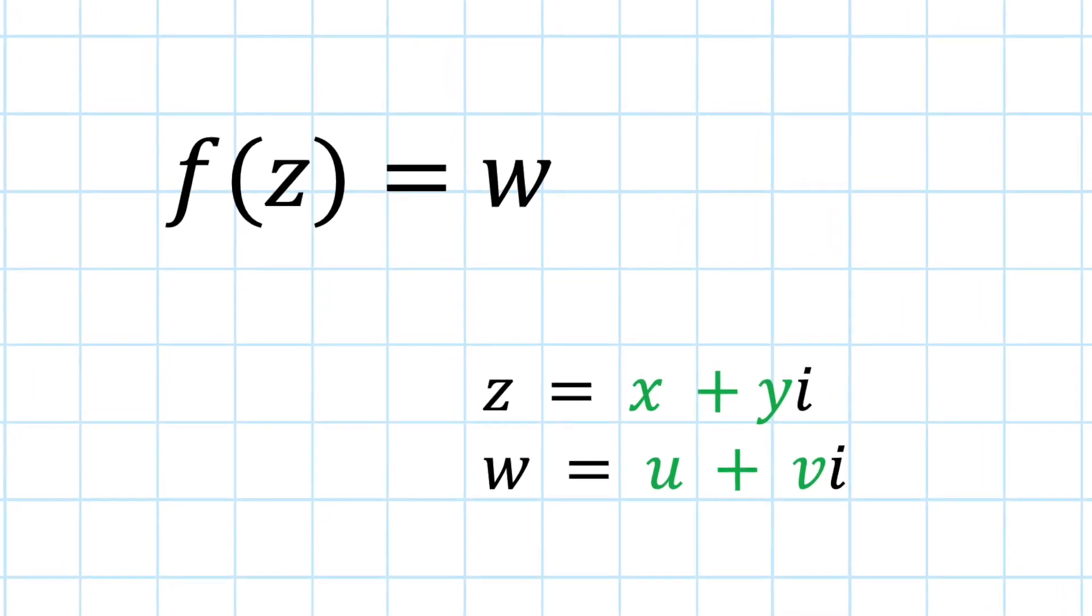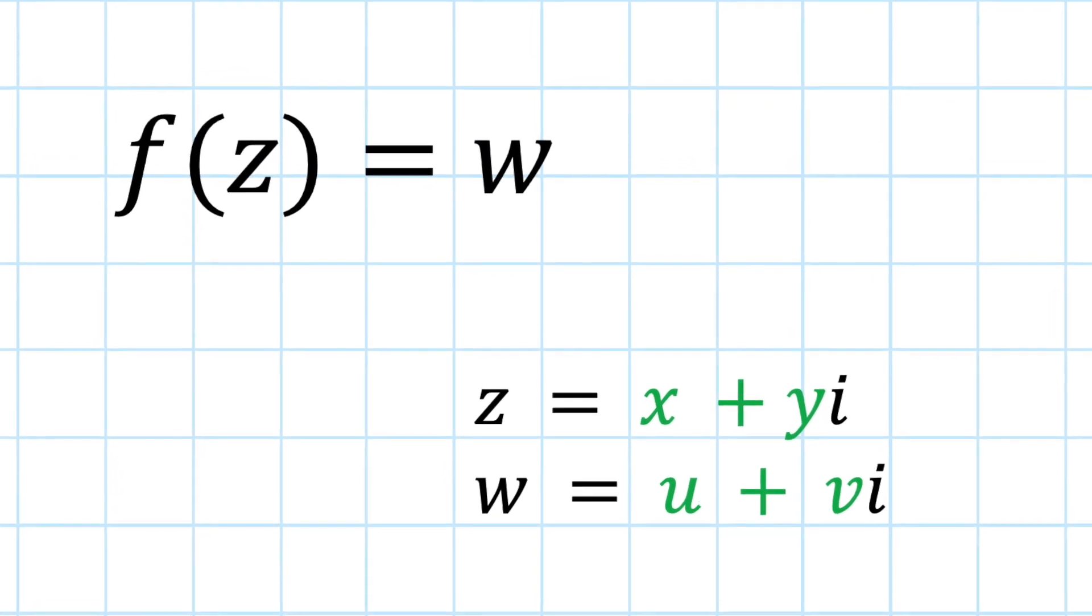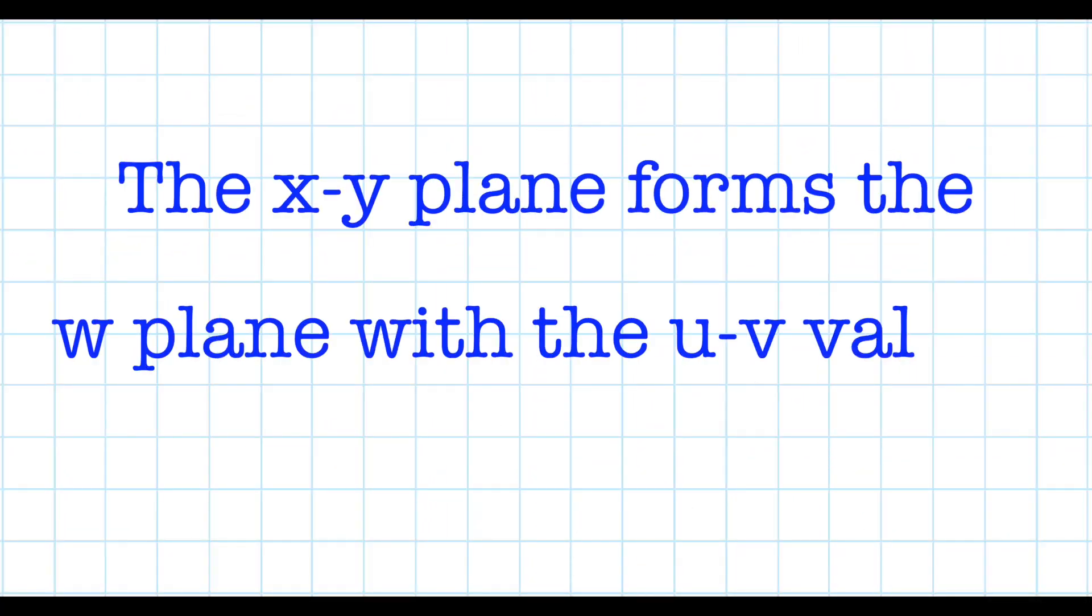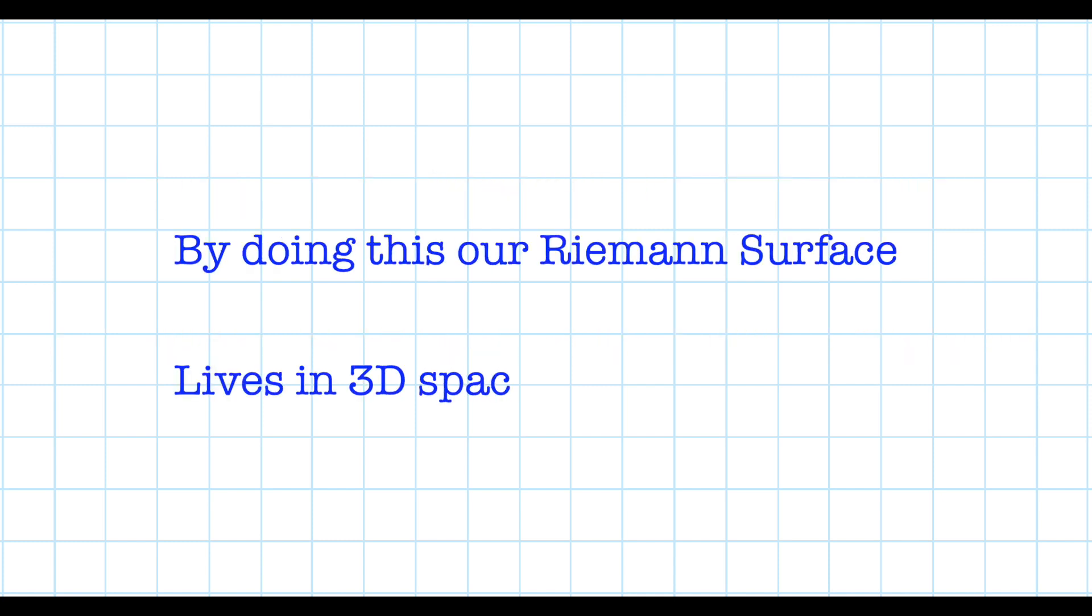To make a Riemann's surface, first we let z equals x plus yi and w equals u plus vi. Now we position our surface directly above the w plane. What's left is to let either the real value or imaginary value of z represent the height of the surface.